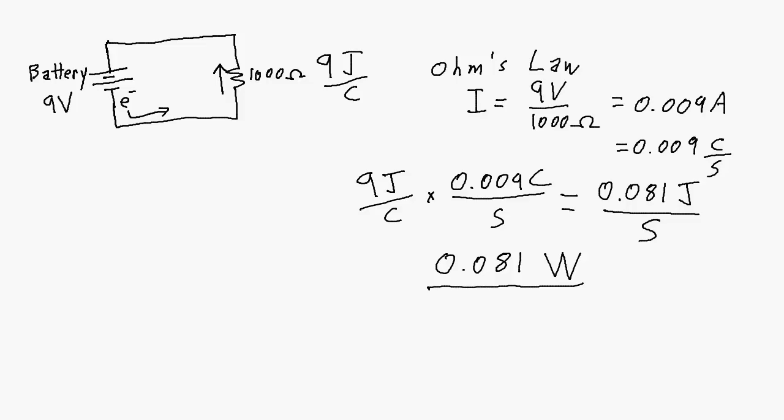On the other side of the circuit, the same amount of current flows out of and back into the battery as passes through the resistor. So we have 0.081 watts of electrical power being generated by the battery — converted from chemical form into electrical form. The power source equals the power load.